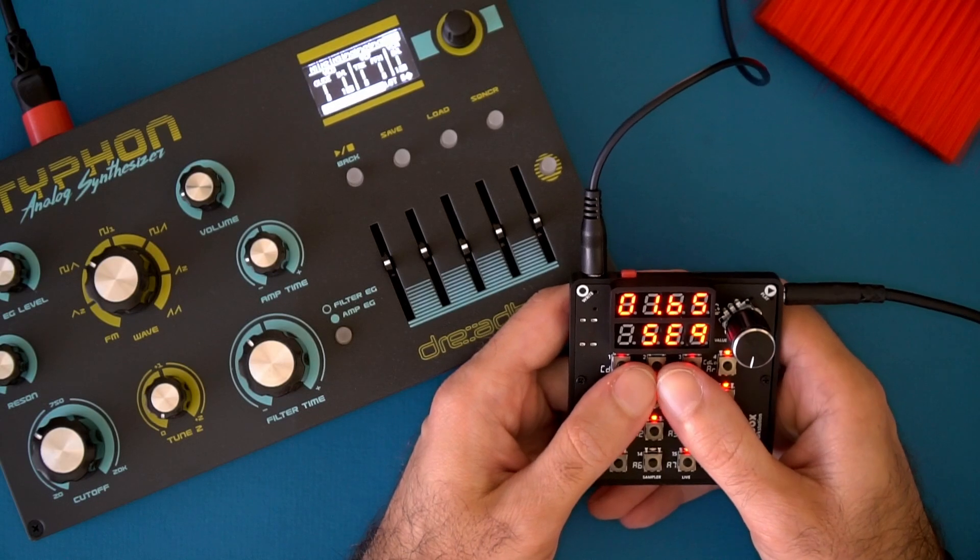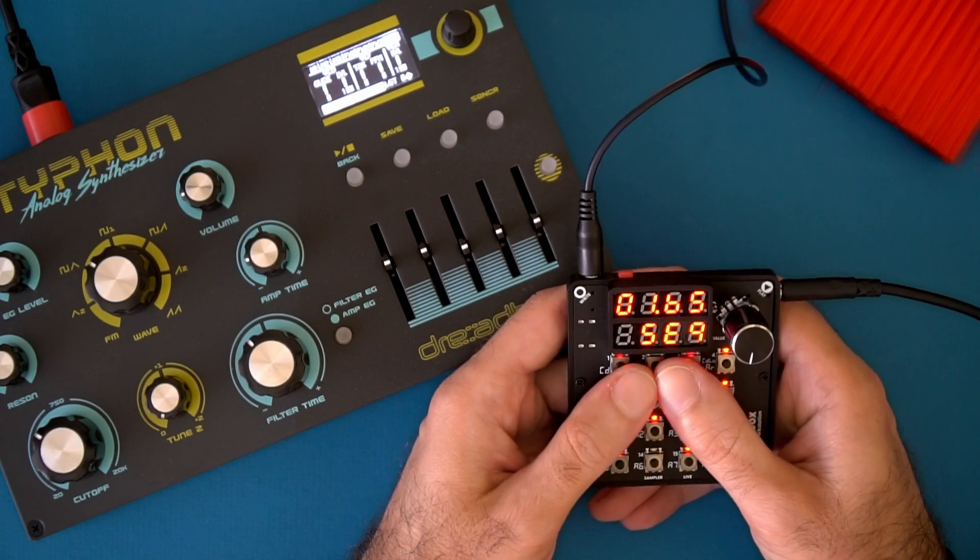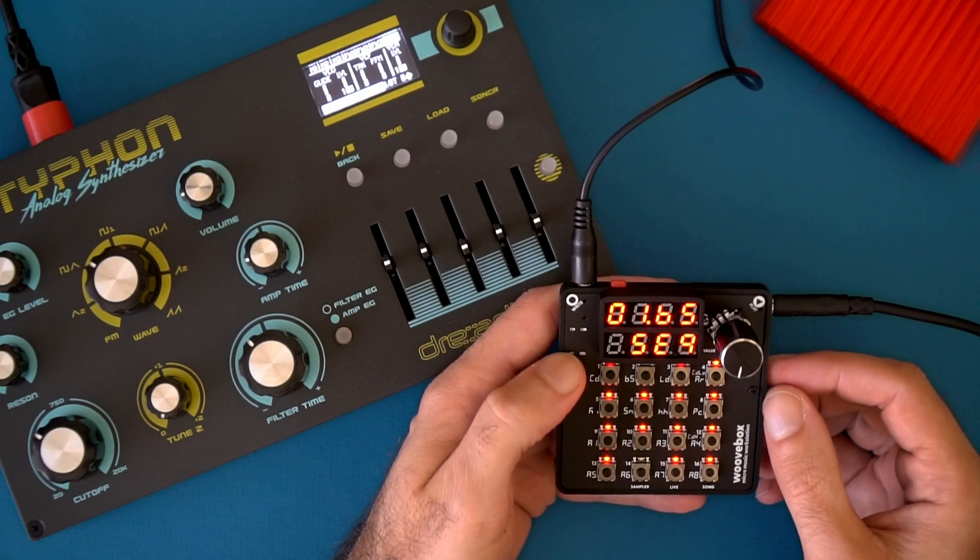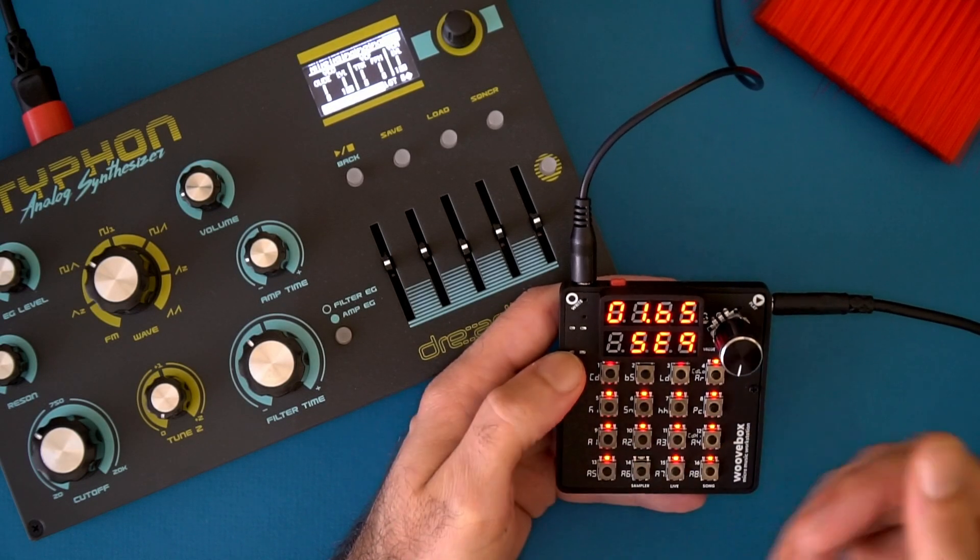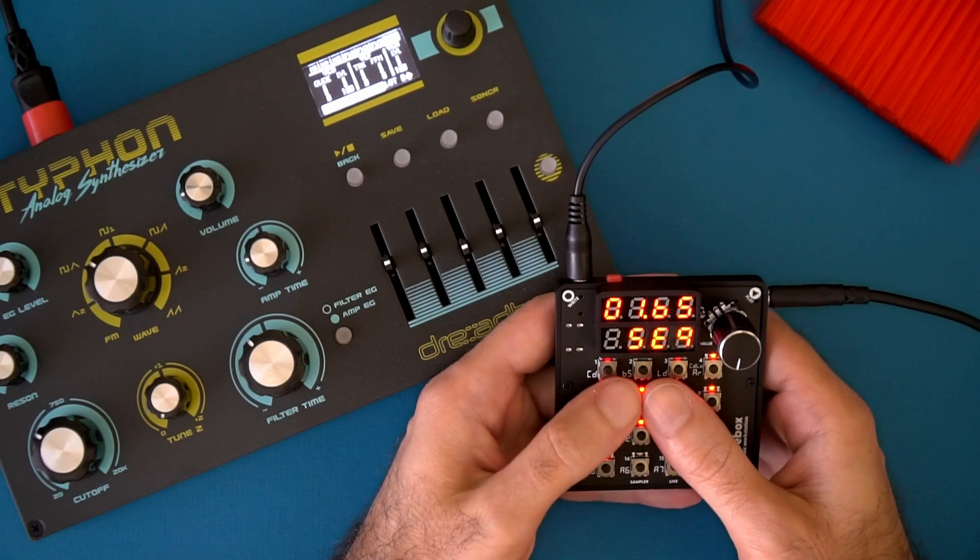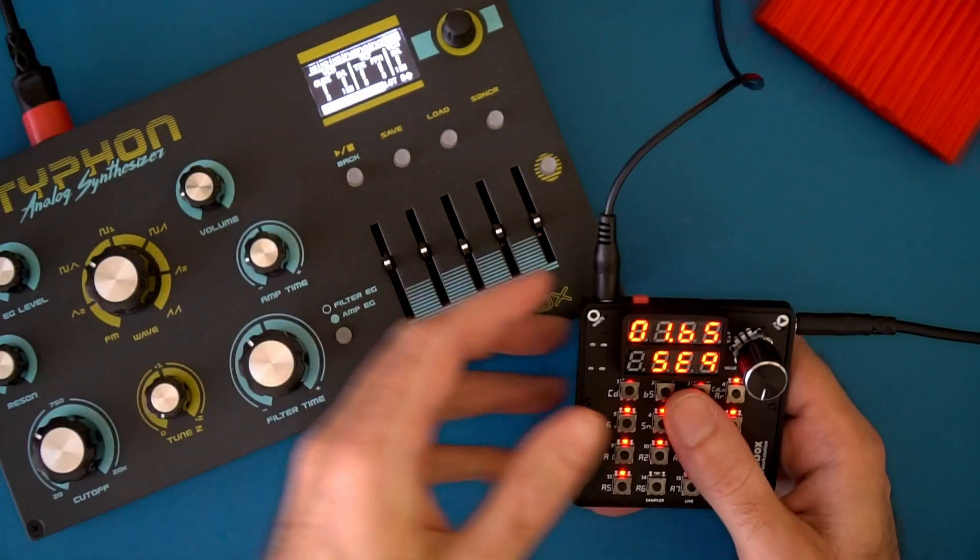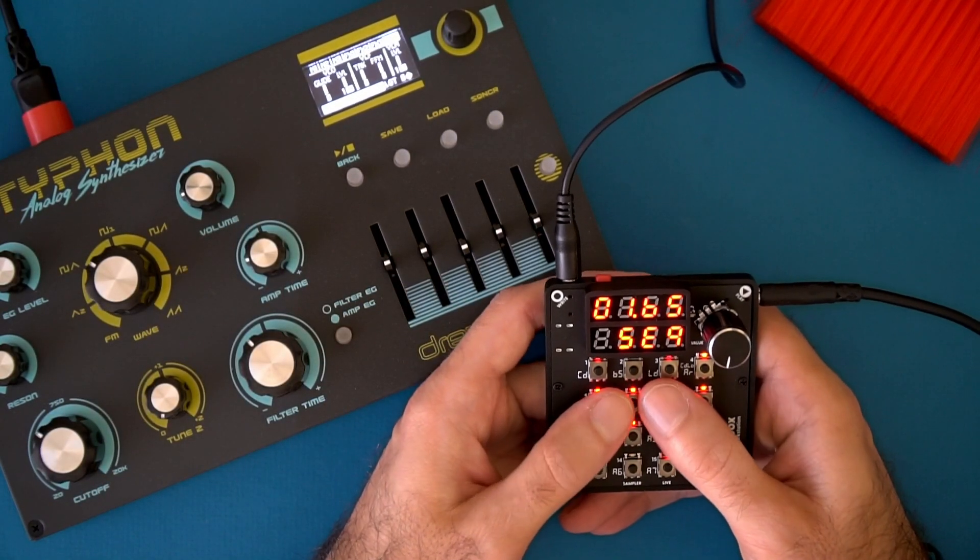And that is it for sequencing external gear using the MIDI out port. Now this has 16 tracks, each one of them sending MIDI so you can technically sequence 16 different synthesizers. You'll just need either a MIDI through box or you can use synthesizers with a MIDI through option. Thank you so much for being here and ciao ciao!